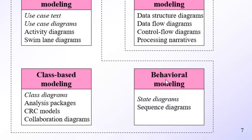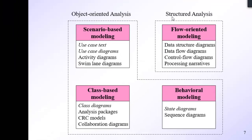The third type of object-oriented analysis model is behavioral modeling, in which we discuss state diagrams, sequence diagrams, and sequence activities. Structured analysis remains static throughout the software development process — those are UML diagrams that will not change. In structured analysis, we draw flow-oriented modeling diagrams to show the flow of different modules: data structure diagrams, data flow diagrams, control flow diagrams, and processing narratives.